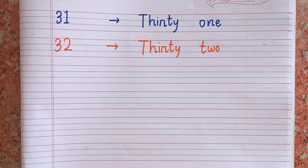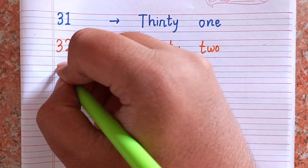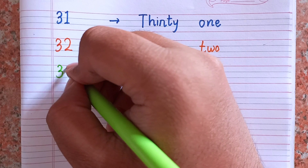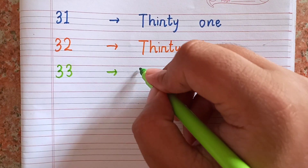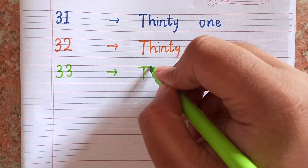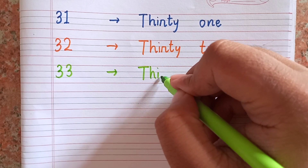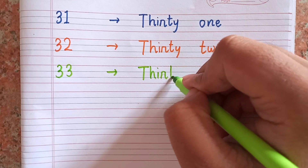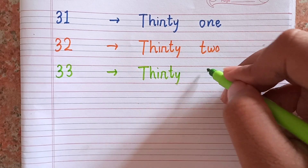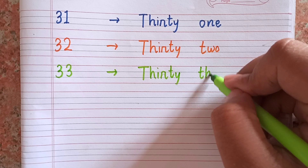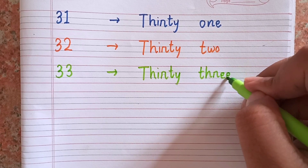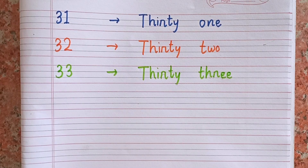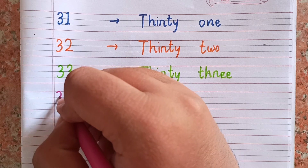After thirty-two, the next number is thirty-three — 3-3. The spelling of thirty-three is T-H-I-R-T-Y T-H-R-E-E. 33.